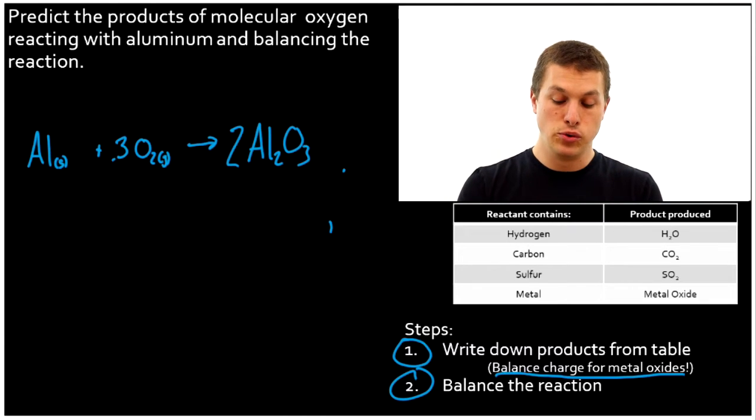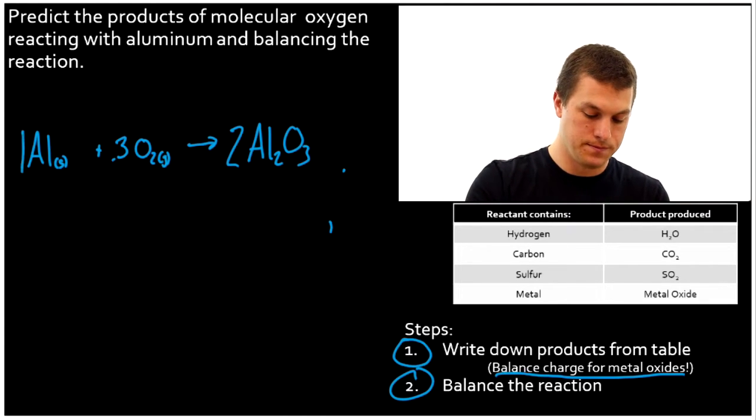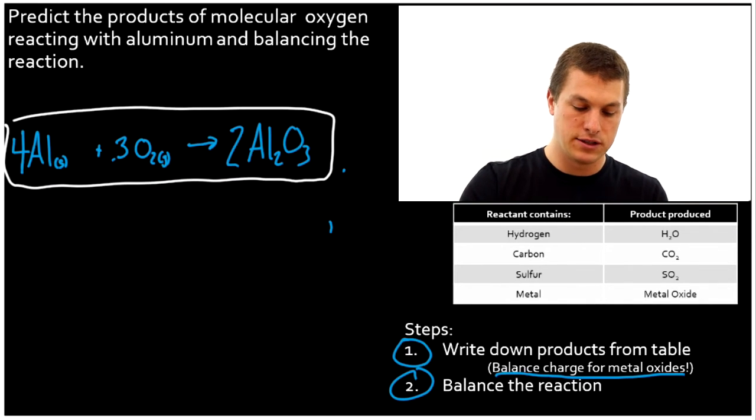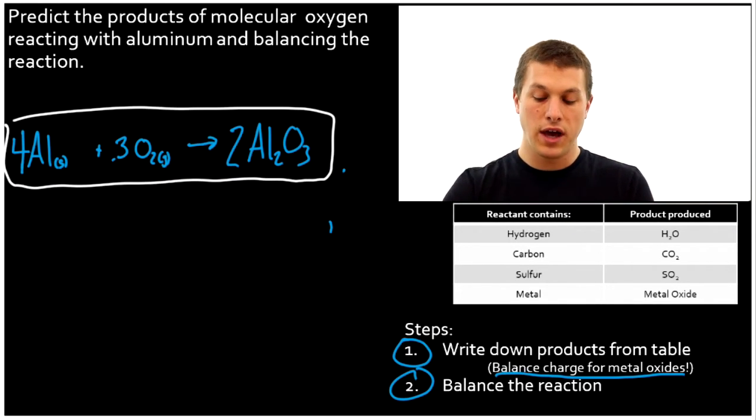Also, I have two Al2. That means I have four total aluminums. Again, if that balancing was too quick for you, go check out that balancing chemical reactions video. Okay, so thanks for watching this episode of Real Chemistry where we've learned how to predict the products for combustion reactions.